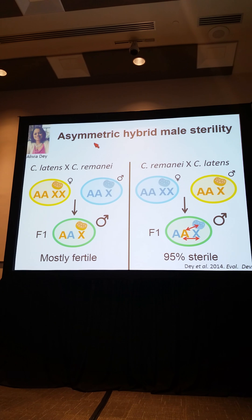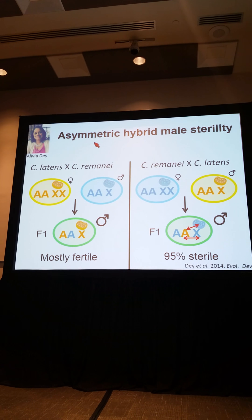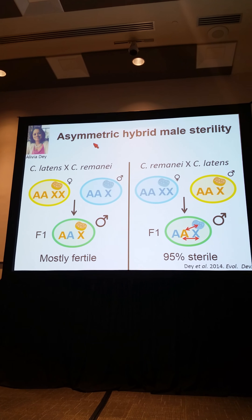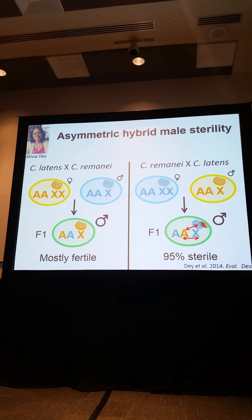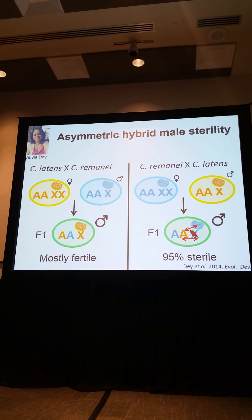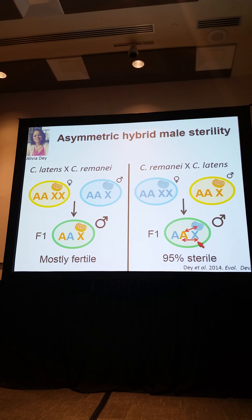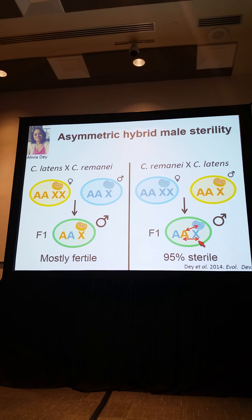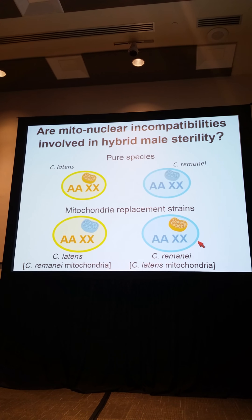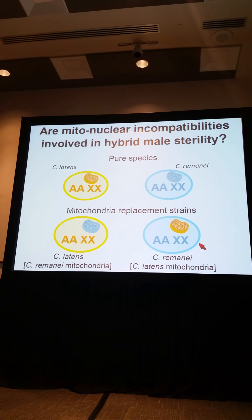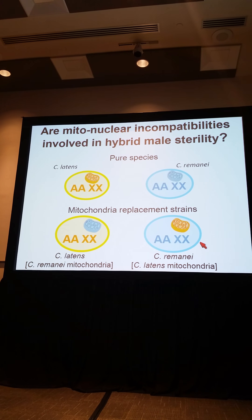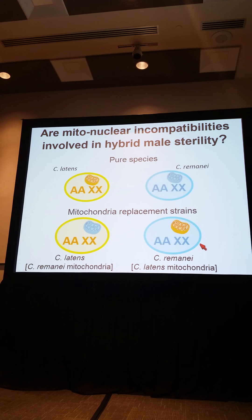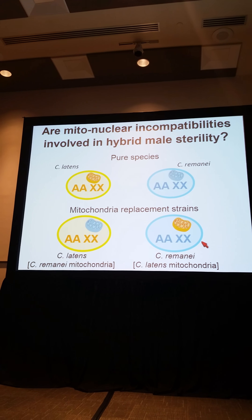Whenever we see asymmetric postzygotic isolation, it's predicted to be caused by some interaction involving a uniparentally inherited element. That potentially means an interaction between remanei mitochondria and the latens autosomal genome, or the remanei X chromosome and the latens autosomal genome. We know that mitonuclear incompatibilities are important in speciation, and so we wanted to directly test whether mitonuclear incompatibilities caused this hybrid male sterility.